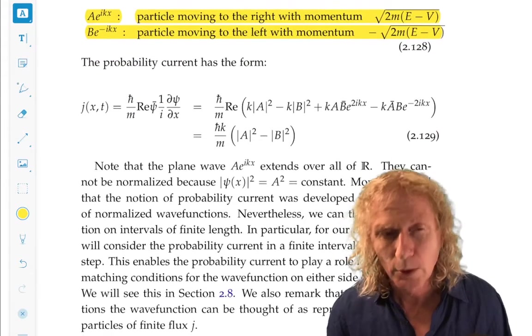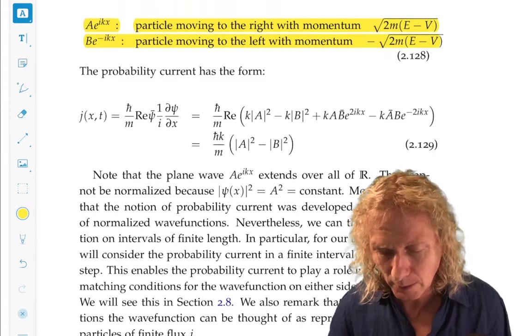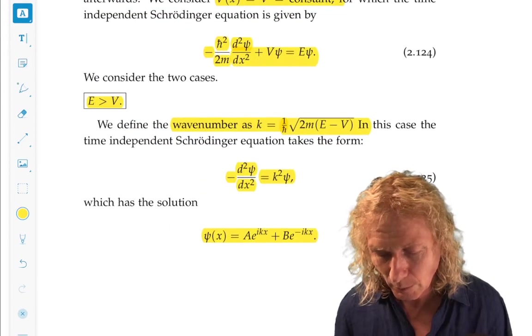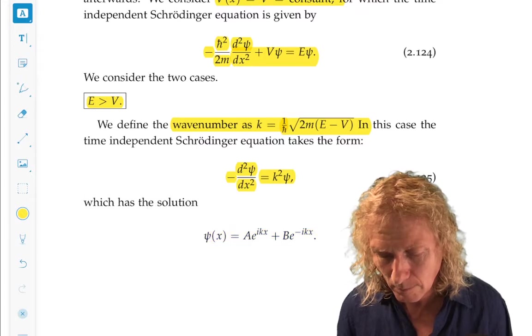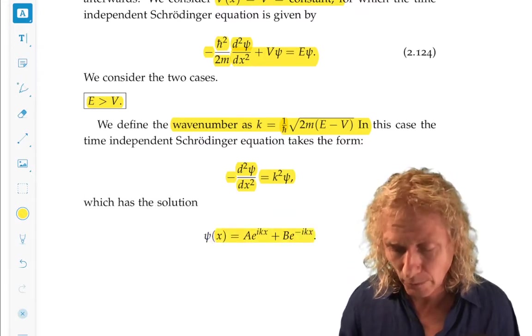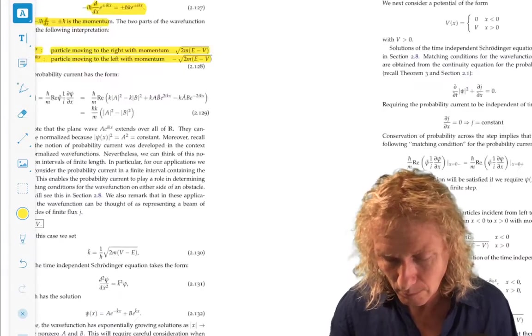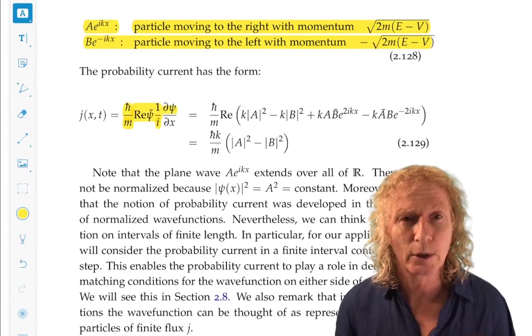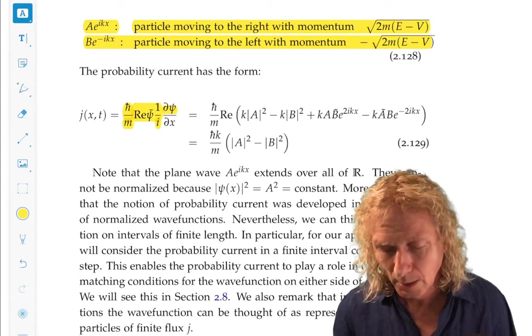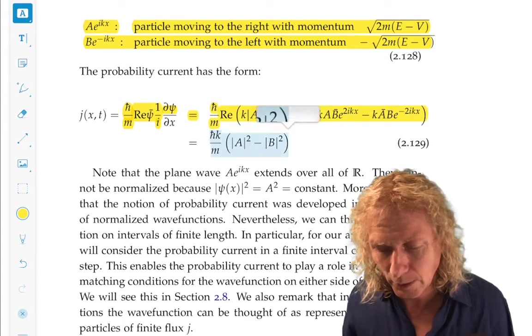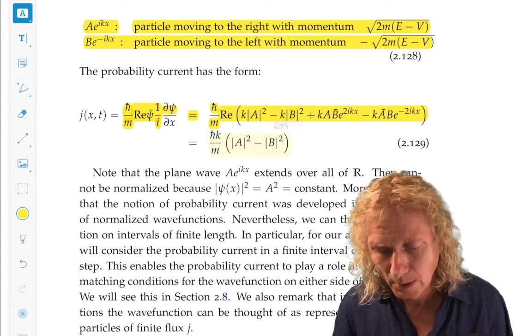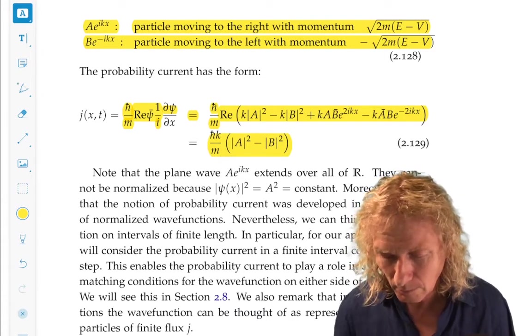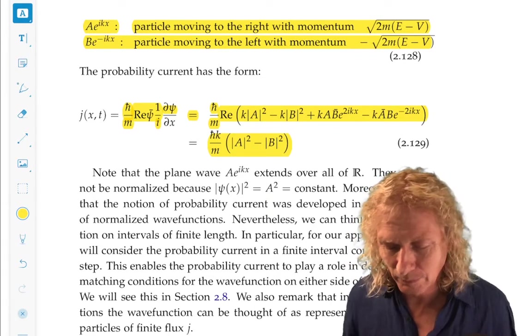We can compute the probability current, and this is going to be very important when we consider these scattering problems for this particular wave function. This is a nice calculation to do. Remember, this is the general expression for the probability current. We go through this calculation and we end up with this expression here. So I urge you to repeat this calculation and arrive at the same answer.